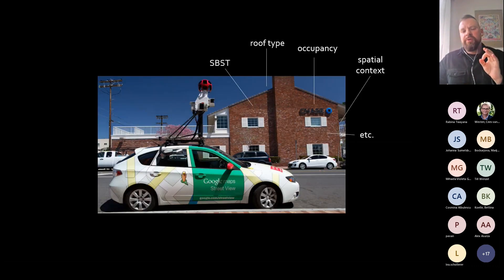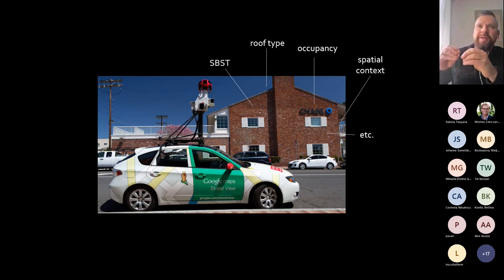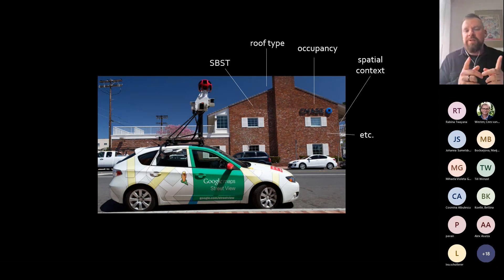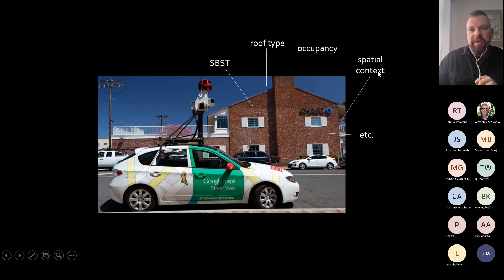What we are currently doing includes extending our description — not only mapping one specific target variable directly for an earthquake-specific building type. We were also following the idea proposed within GEM to have a faceted taxonomy: a very exhaustive description of the built environment that would allow mapping those variables into fragility functions or vulnerability functions for multiple hazards. Therefore, the idea is to provide a very exhaustive characterization of a building, including roof type, occupancy, spatial context, and so forth.